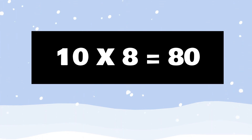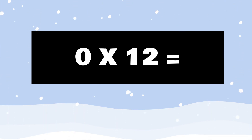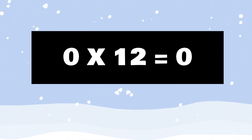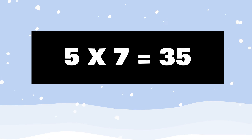What does 0 times 12 equal? 0 times 12 equals 0. What does 5 times 7 equal? 5 times 7 equals 35.